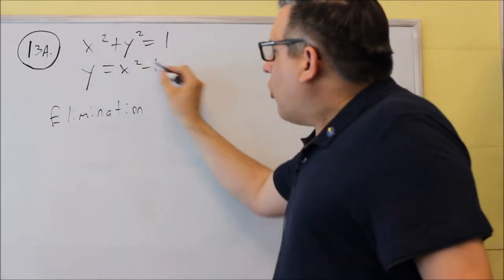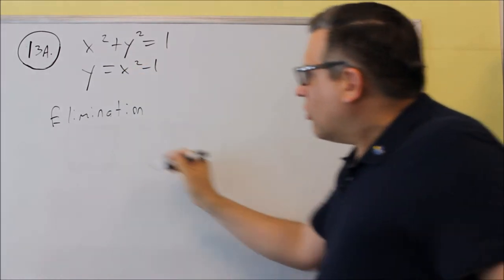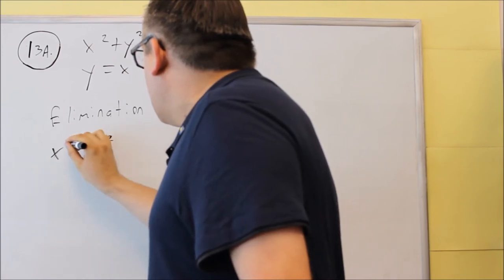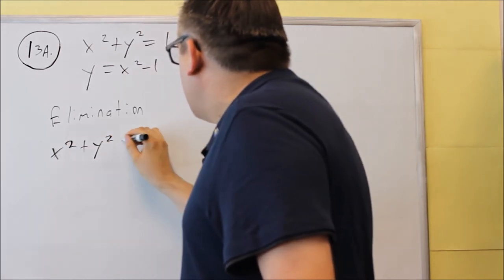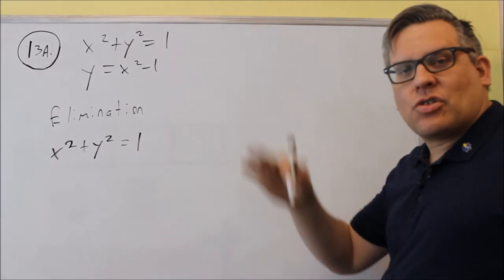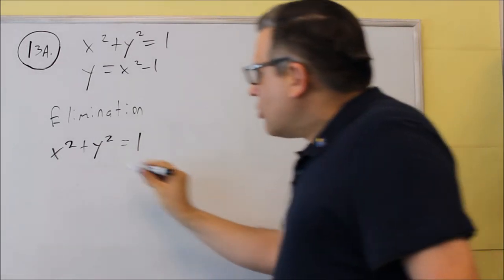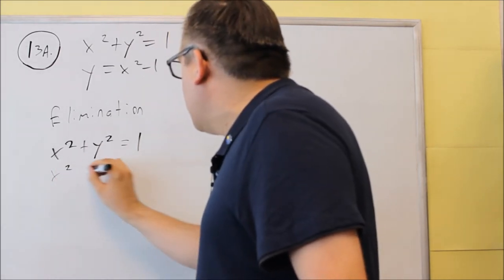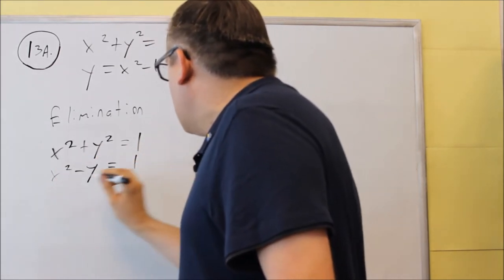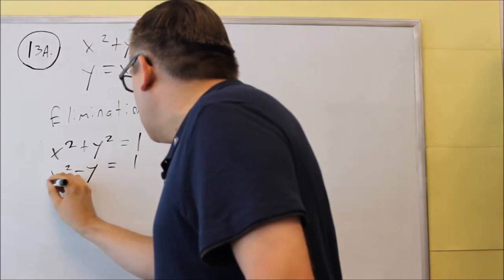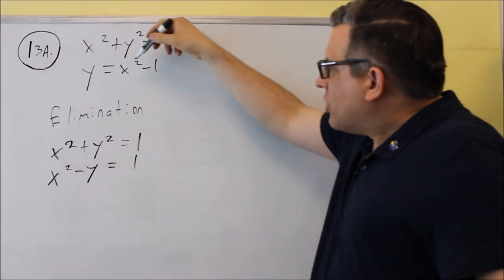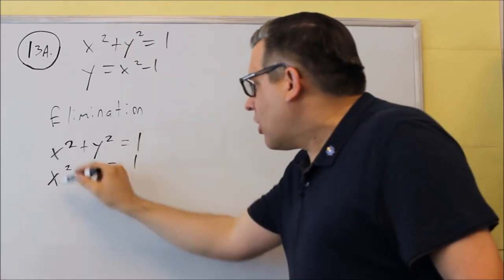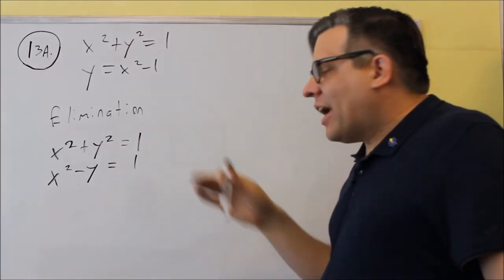Elimination means we're going to multiply one or both equations by something, add them together, and cancel a variable out. To do that, make sure the ordering is correct — I want to line up the x's, y's, and constants. I'll leave the first equation as is. For the second equation, I'll rewrite it as x squared minus y equals 1, which I get by subtracting y from both sides and adding 1 to both sides.